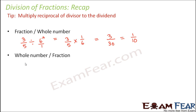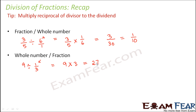The second scenario is whole number divided by a fraction — for example, nine divided by one by three. The divisor is one by three, so we multiply nine by the reciprocal of one by three, which is three. The answer is twenty-seven.